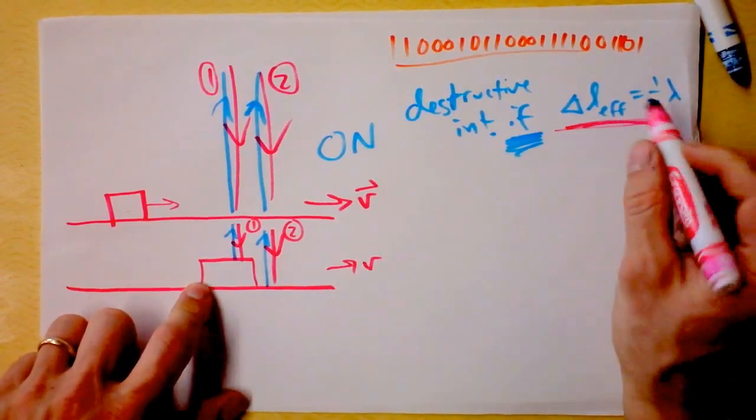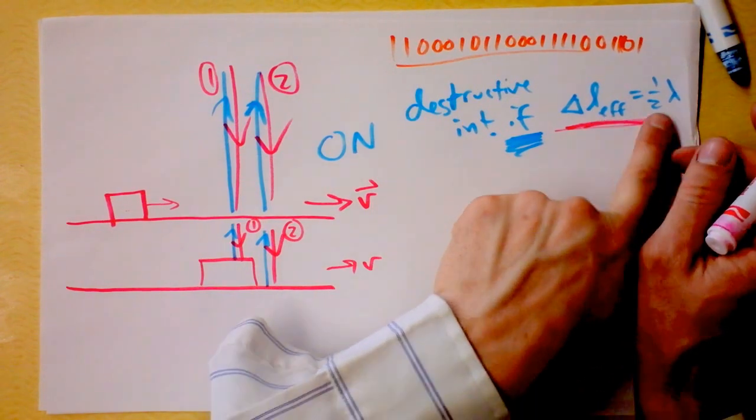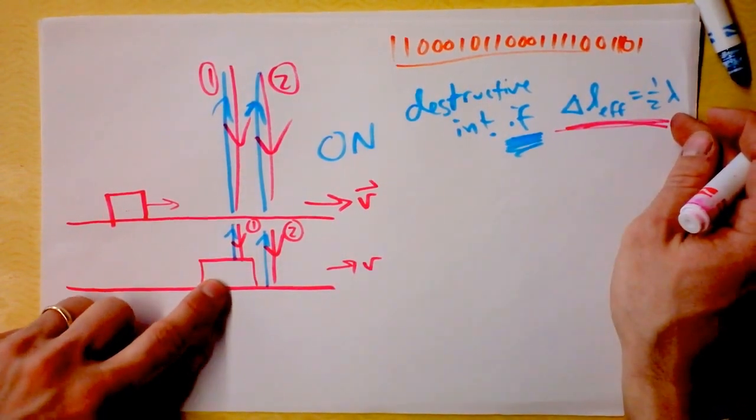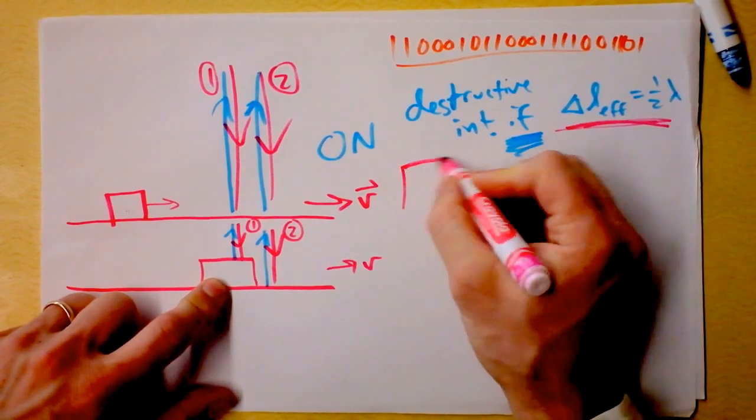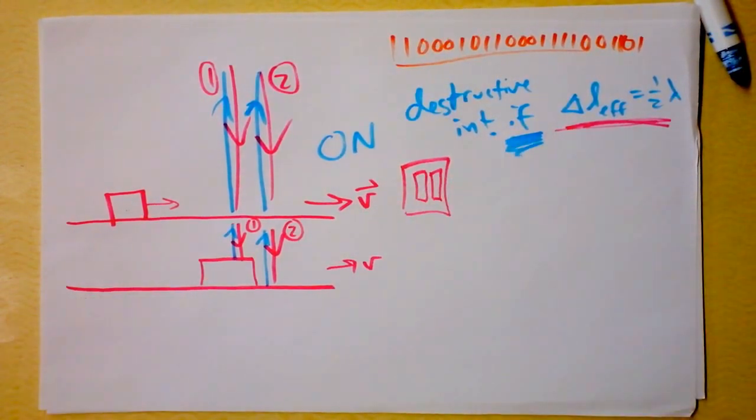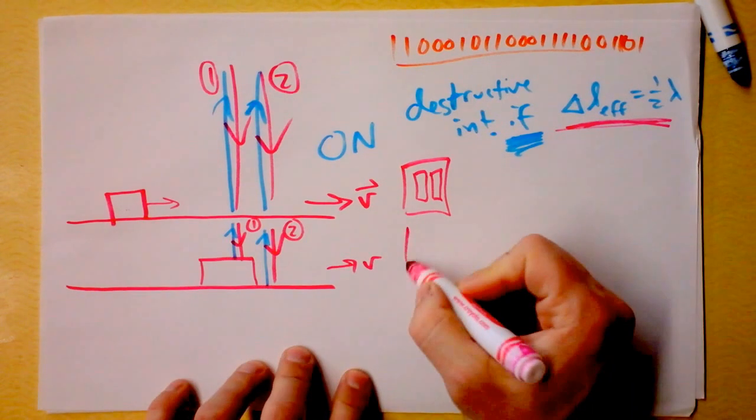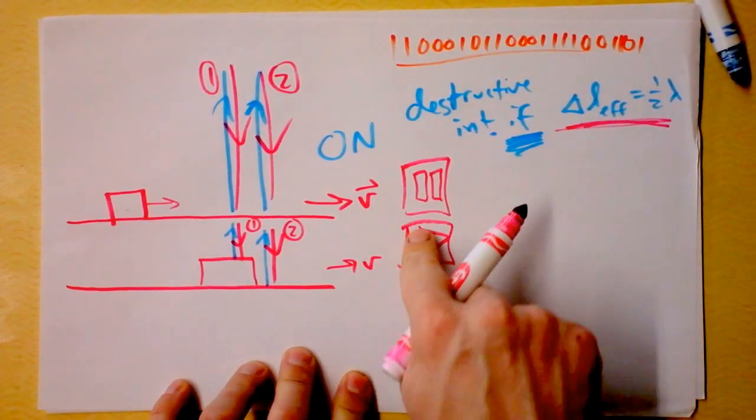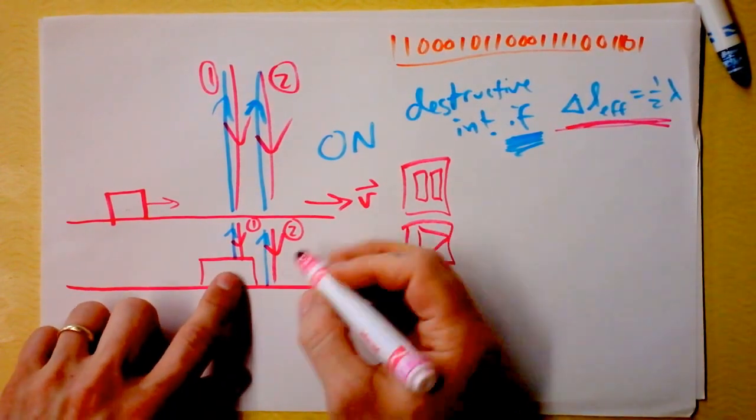Now the clever thing is, this is incredibly clever. How can we get it so that we have an effective path length difference of half a lambda? How tall do you want this block to be? Pause it, figure it out. Seriously, I'm not going to do it until you pause it. Okay, thank you for pausing it. Then we shall go on.